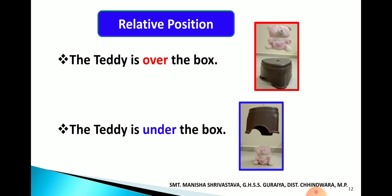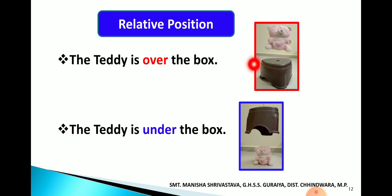Relative position: 'The teddy is over the box' — 'on' का अर्थ भी के ऊपर होता है, लेकिन 'on' तब use होता है जब direct contact हो. यहां दोनों के बीच direct contact नहीं है, तो 'over' का use करेंगे. 'The teddy is under the box' — under का मतलब के नीचे. Over और under एक दूसरे के opposite words हैं, और दोनों में ही noun का दूसरे noun से direct contact नहीं होता.